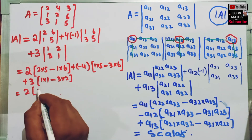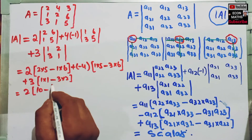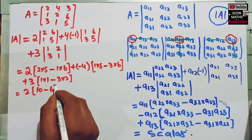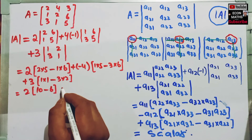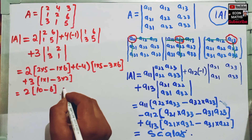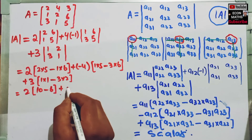Further solving: 2 times 5 is 10, minus 1 times 6 is 6. This plus...